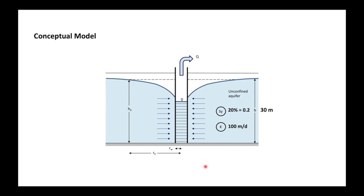First we draw a conceptual model: K is 100 meters per day, thickness 30 meters, specific yield 20 percent. Actually, we don't need to know the specific yield because we're dealing with steady state, in which case storativity is not important — just seeing if you're awake!